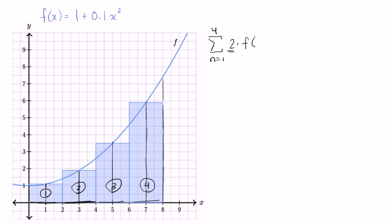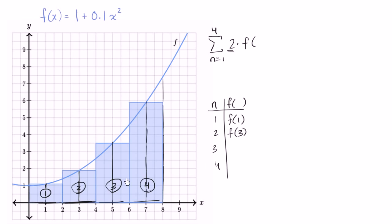Let's see how we want to think about it. When n is one, two, three, four, we take f of something: f of one, f of three, f of five, f of seven. The relationship: multiply by two and subtract one. Two times one minus one is one, two times two minus one is three, two times three minus one is five, two times four minus one is seven. So this is 2n minus one.